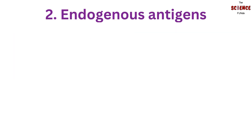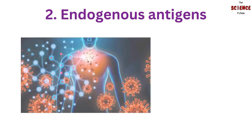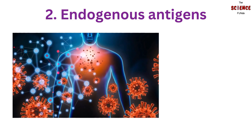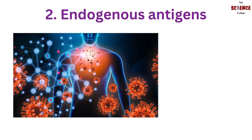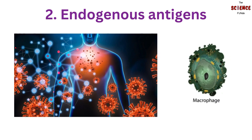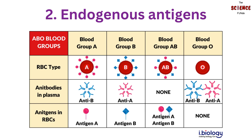The second type is endogenous antigens. The word 'endo' means inside. Endogenous antigens are generated inside the body due to viral or bacterial infections or cellular metabolism. These are the body's own cells, subfragments, compounds, or antigenic products that are produced. The endogenous antigens are processed by macrophages, which are later recognized by cytotoxic T cells. An example of an endogenous antigen is blood group antigens.